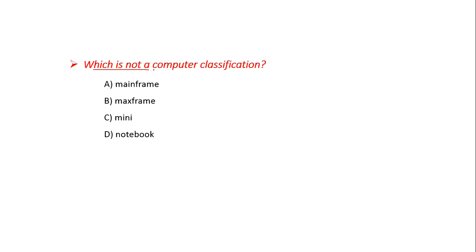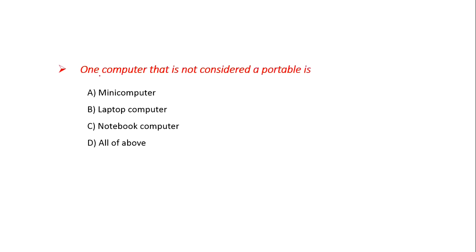Which is not a computer classification? Option A: Mainframe — correct category, B: Max Frame — this is not a category, C: Mini — correct, D: Notebook — correct. The answer is B: Max Frame. One computer that is not considered a portable computer is — Option A: Mini Computer, B: Laptop Computer, C: Notebook Computer, D: All of the above. Laptop and Notebook computers are easily portable, but Mini Computers are not in the portable category. The answer is A: Mini Computer.